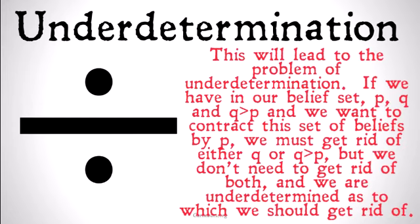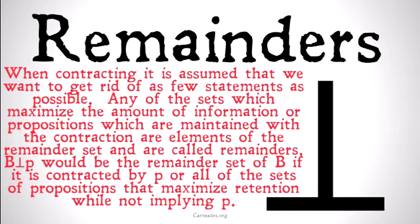This leads to the problem of underdetermination. If we have P, Q, and 'Q implies P' in our belief set and want to contract by P, we must get rid of either Q or 'Q implies P' — but we don't need to get rid of both, and we want to keep as much information as possible, so we probably don't want to get rid of both. We are underdetermined as to which we should get rid of. Belief revision theorists try to get around this by coming up with a theory of remainders, creating a function over remainders which picks the best beliefs to hold onto. But as we note from the problem of underdetermination, there's not going to be a rational way to do this.